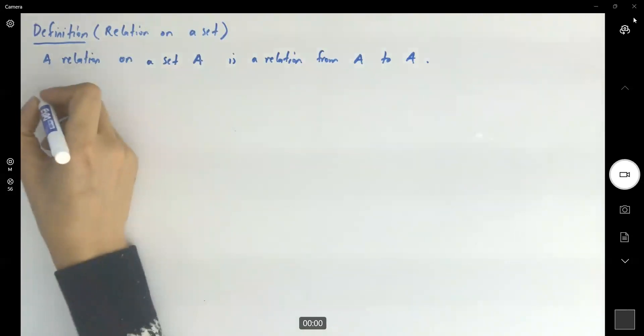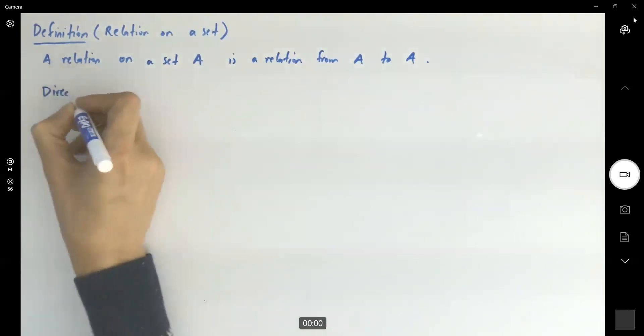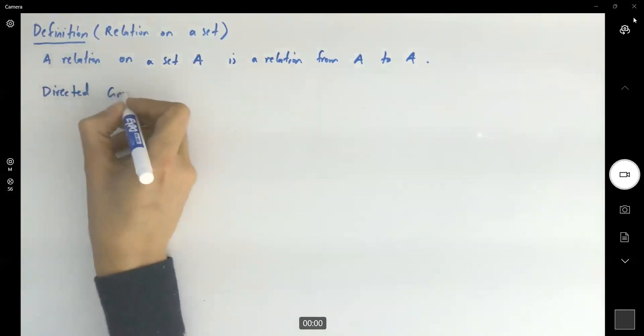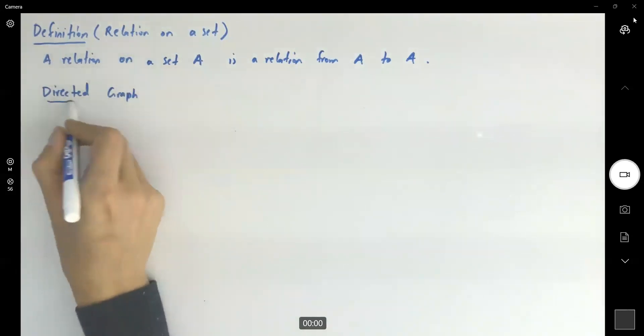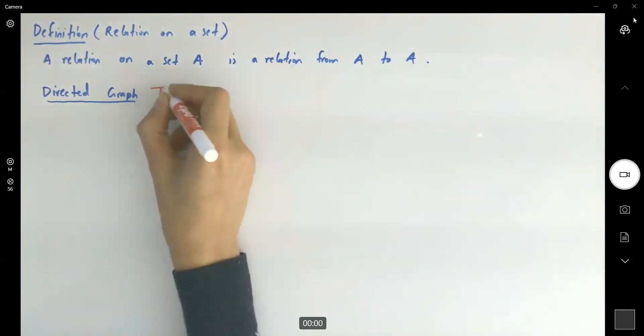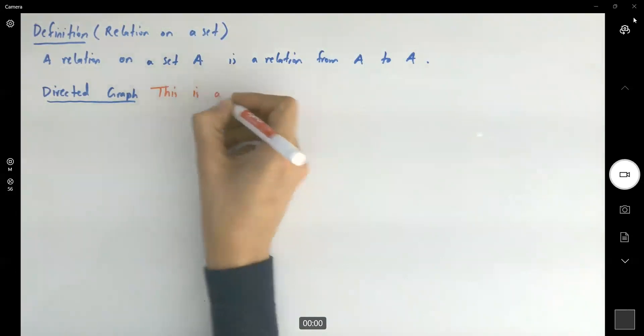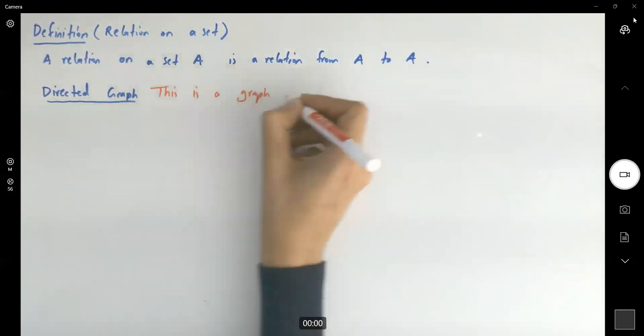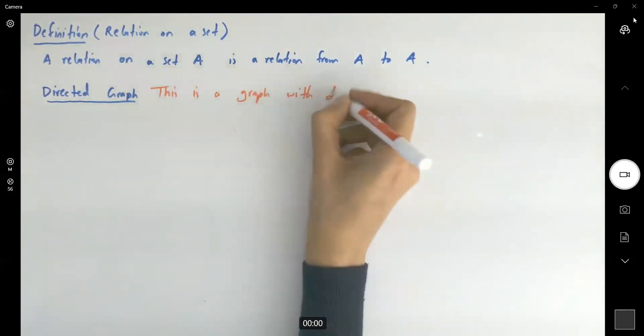We're going to talk about directed graph. It's a graph that has direction. This is a graph with direction.